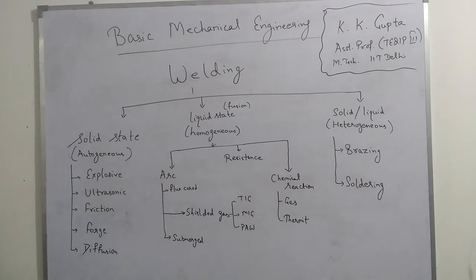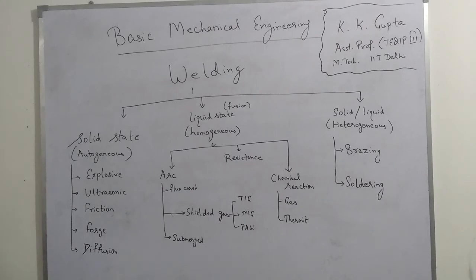The third one is Heterogeneous welding. In heterogeneous welding, either the parent metals have different chemical compositions, or the parent metals have the same chemical composition but the filler material has a different chemical composition. That's why it is called heterogeneous welding. It is of two types: brazing and soldering.